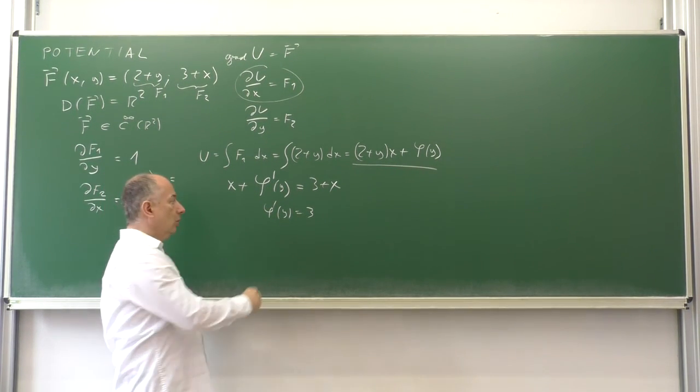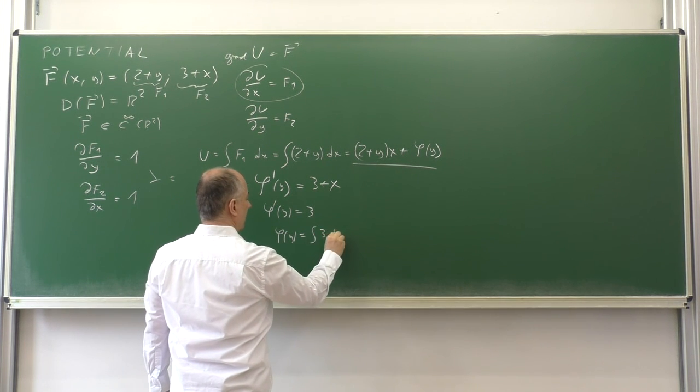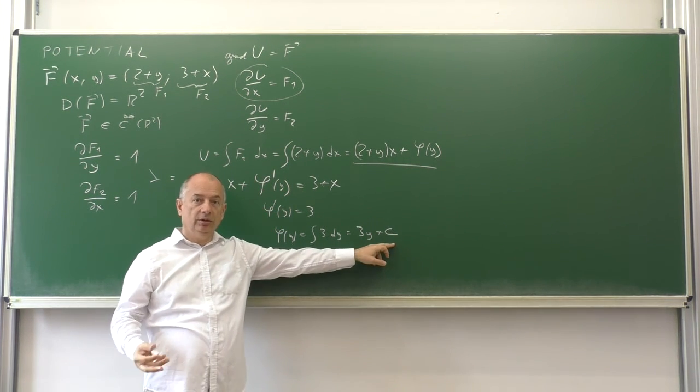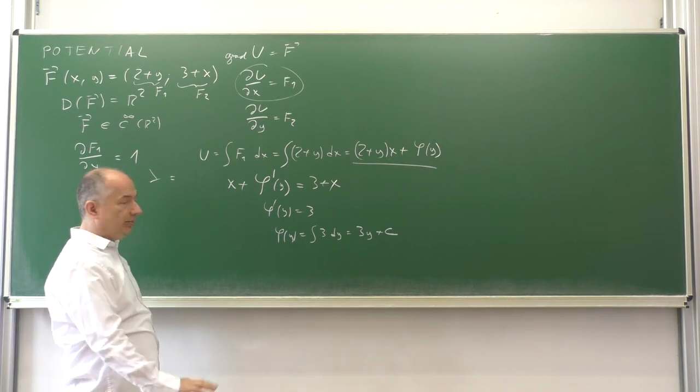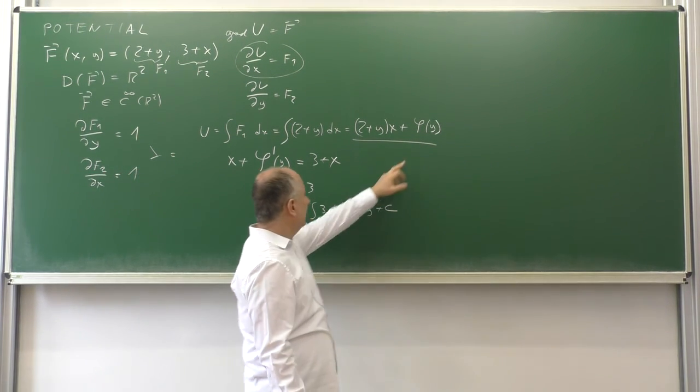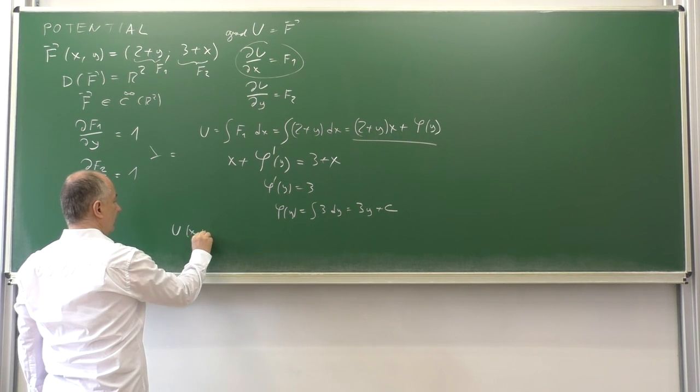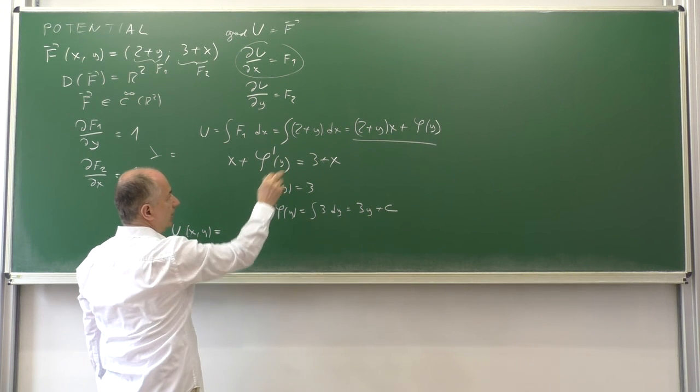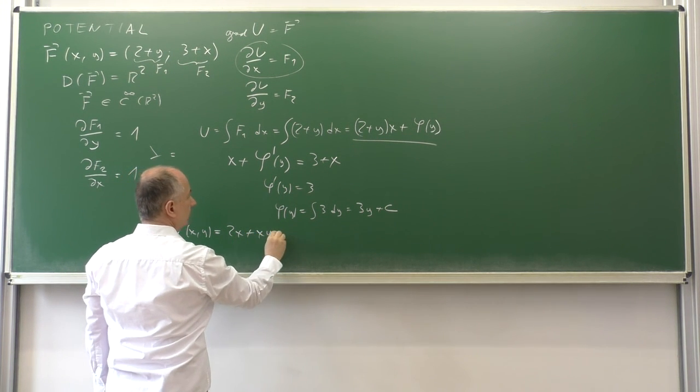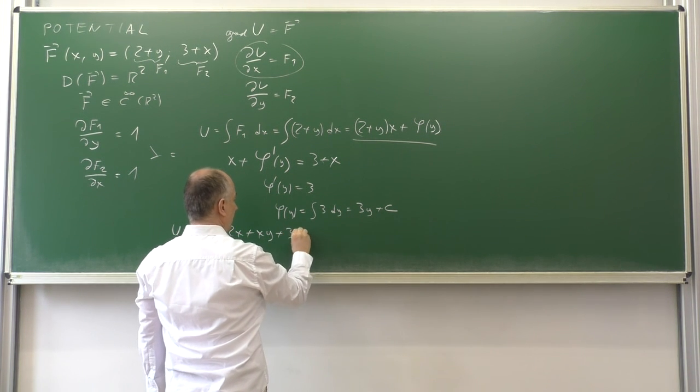When we integrate, φ as a function of y is integral 3 dy, which is 3y plus c. And now c is a real constant, not depending on x, not depending on y. When we have φ, we can put it here and we have the potential. U as a function of x and y is 2x plus xy plus φ, which is 3y plus c.